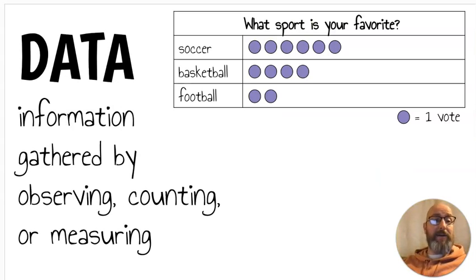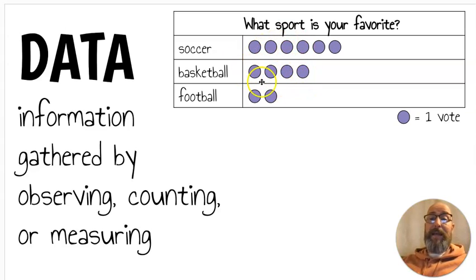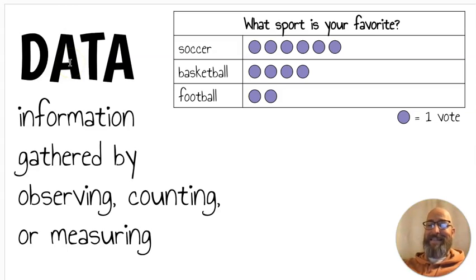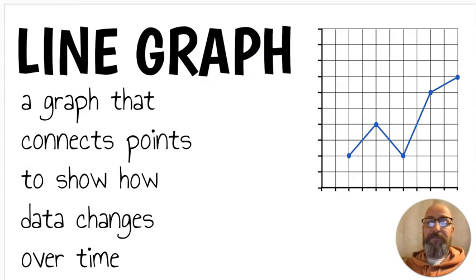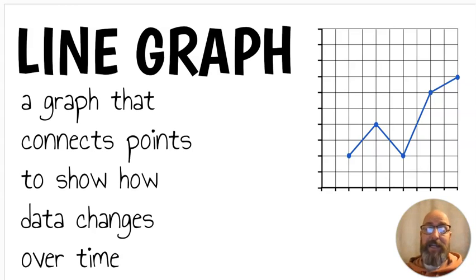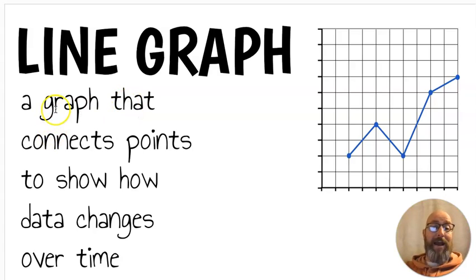Next let's look at graphs and data. Data is information gathered by observing, counting, or measuring. So if you see a chart or a graph, the information gathered on there is data. Some people might say data — it means the same thing. Next we have a line graph. A line graph is a graph that connects points to show how data changes over time — you can see as we go across the graph, the line shows that change.